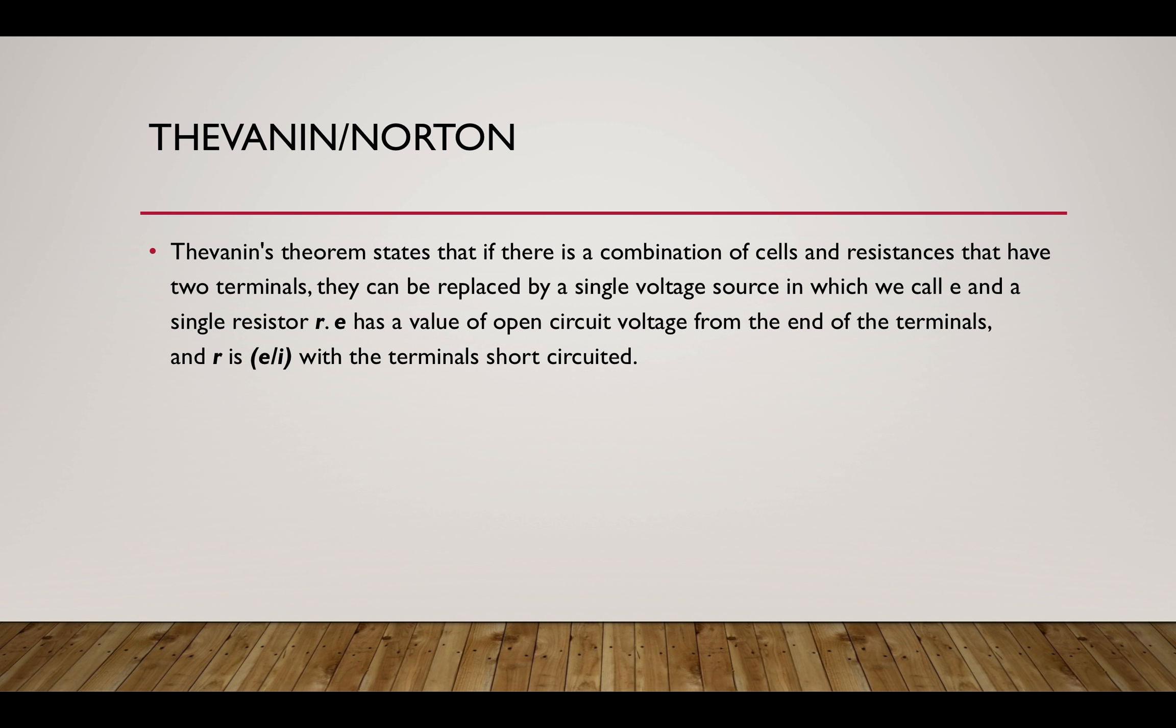The Thevenin and Norton theory was something that was kind of hard for me to understand, but this is what I took away from it. They just state that if there is a combination of sources and resistances that have two terminals, they can be replaced by a single voltage source which we call E and a single resistor R. E has the value of open circuit voltage from the end of the terminals, and R is E divided by the current with the terminals short-circuited.